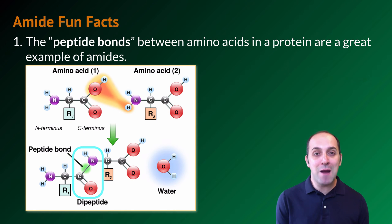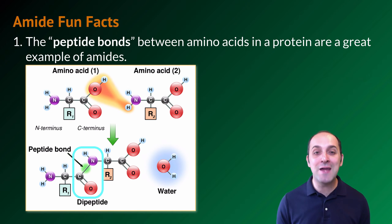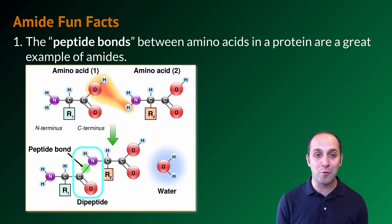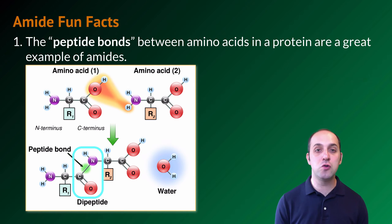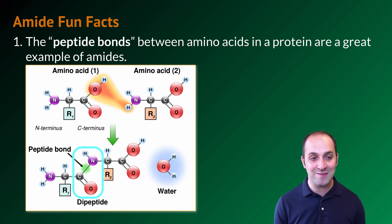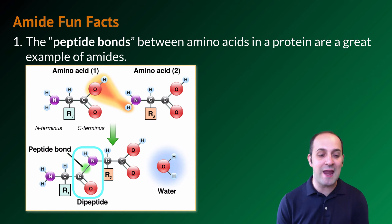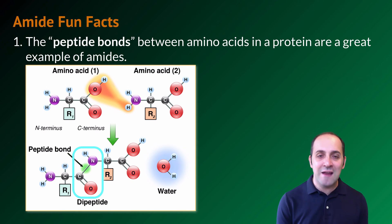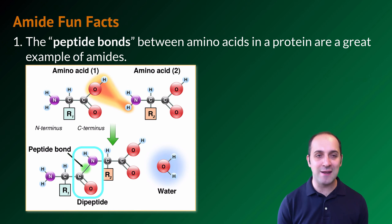In terms of amide fun facts, to come back to proteins, the peptide bonds that are formed when you connect amino acids together in a protein are examples of amide bonds. You can see the connection of two different amino acids in this diagram, and you can see the amide that forms — the peptide bond — which is easily the most important amide bond that we find in biological systems.